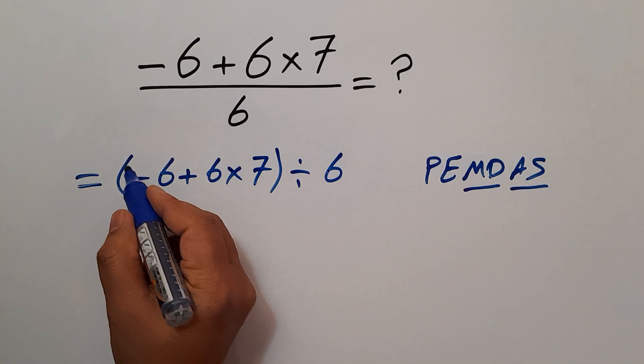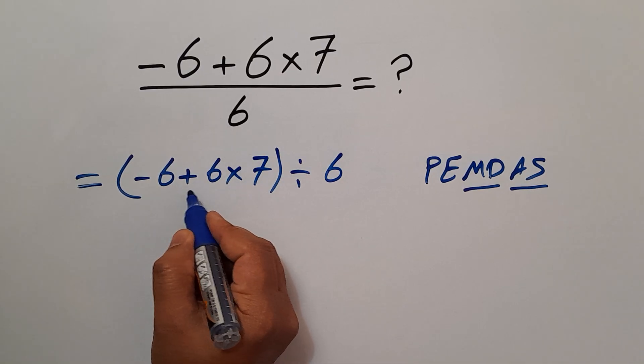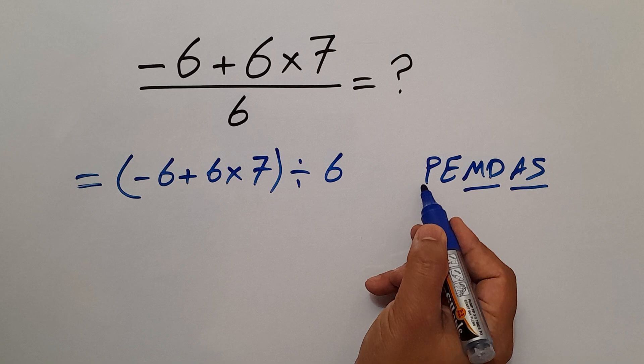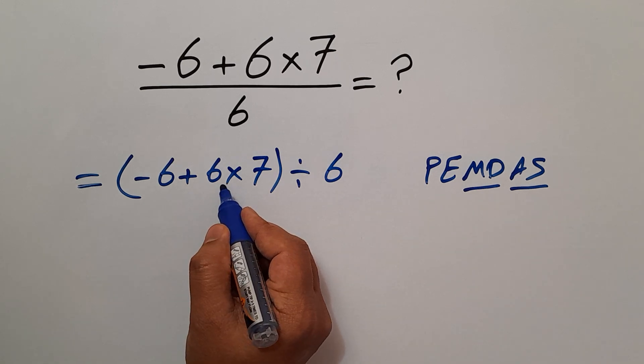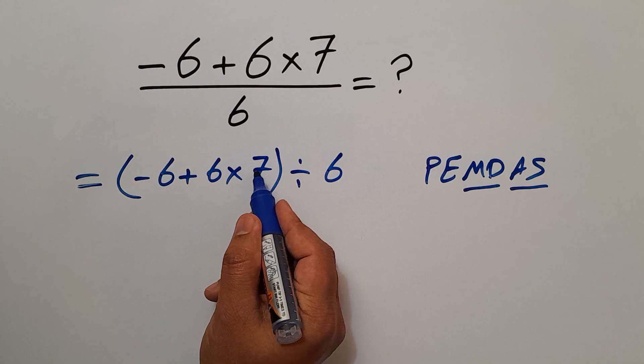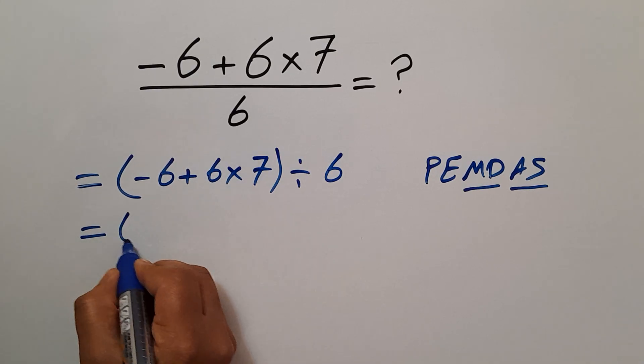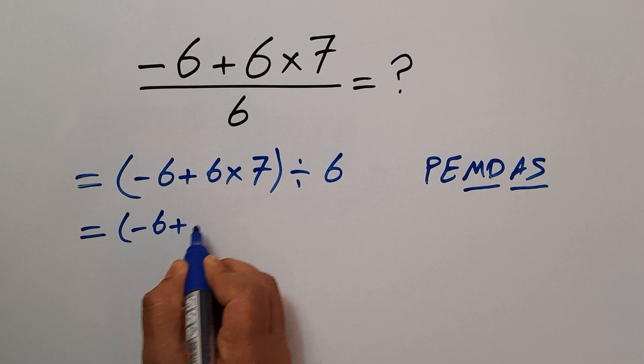According to PEMDAS, first we have to do this multiplication. 6 times 7 gives us 42, so parentheses: negative 6 plus 42.